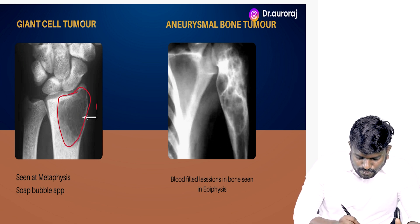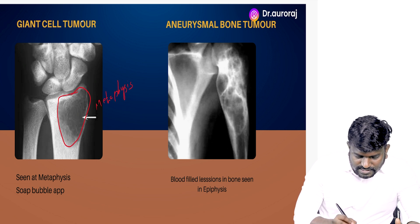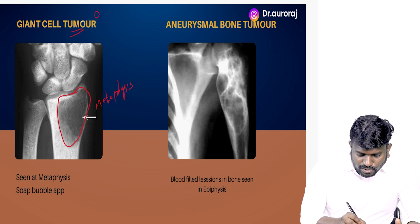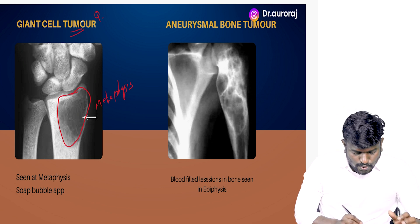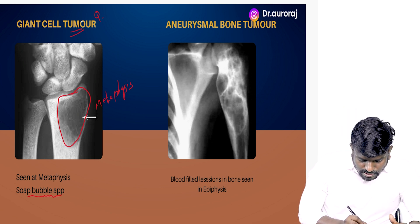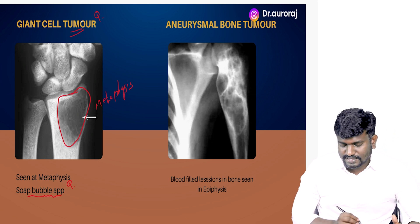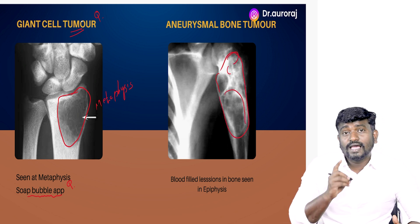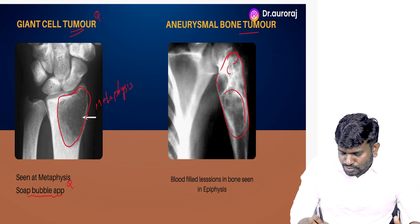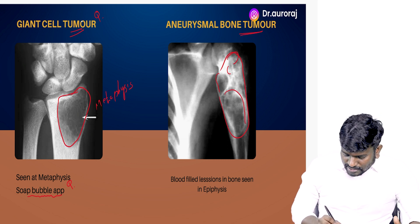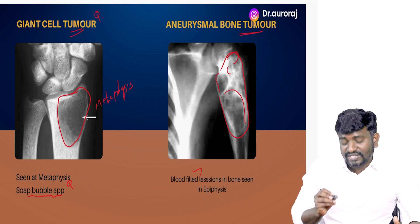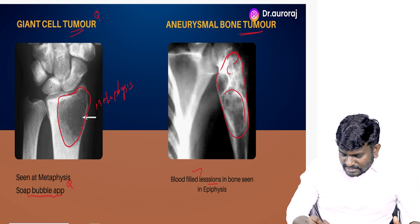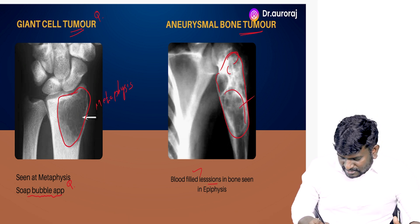Please look at the epiphysis. This is going to be a giant cell tumor — very important for the exam — and it shows a bubble appearance. The tumor over here in the humerus is going to be an aneurysmal bone tumor. Remember, it is going to be blood-filled lesions, especially seen in the epiphysis.